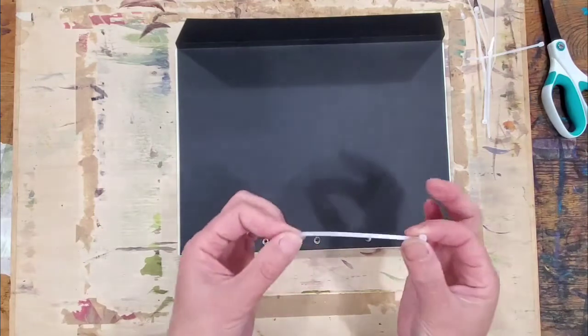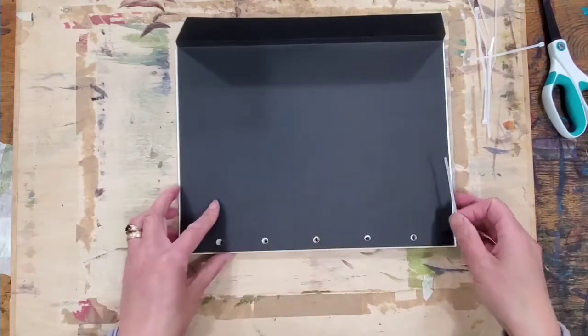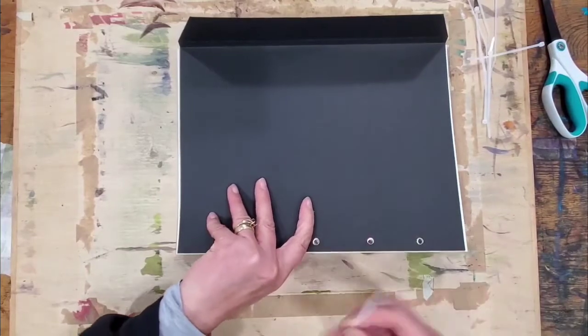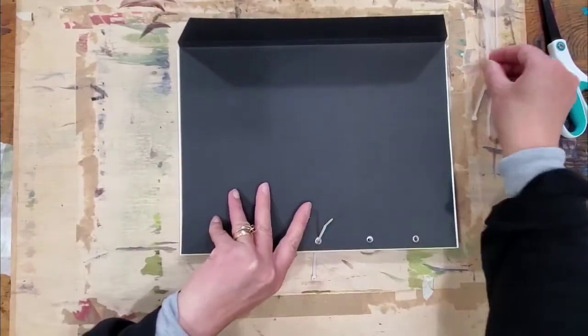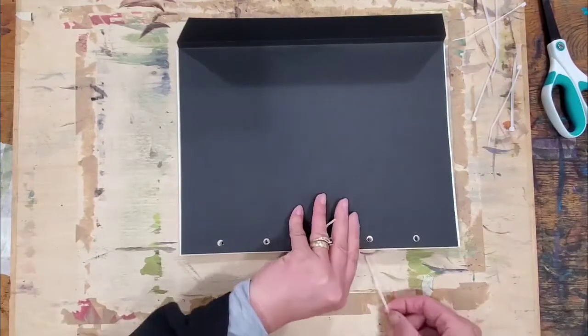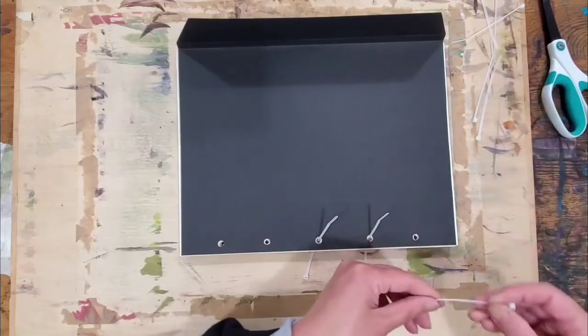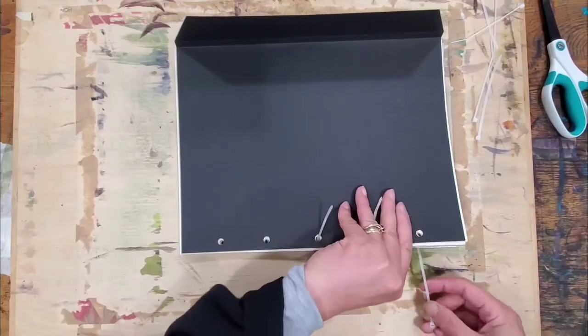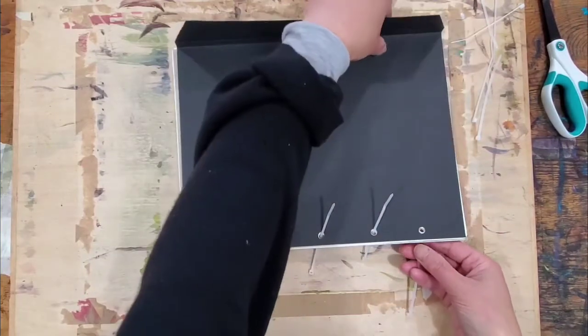And here are the cable ties. The only thing you want to be careful about is you want them all facing the same direction. And this is how I do it—I just put them through this hole, so it doesn't really matter. You can go the other way around.